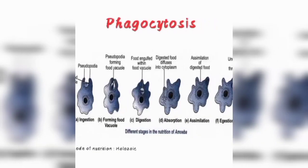Now we will discuss nutrition in amoeba. This process involves several steps: the first step is ingestion, followed by forming a food vacuole, then digestion, absorption, assimilation, and finally egestion.